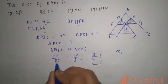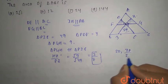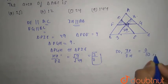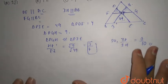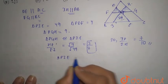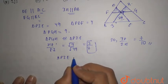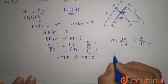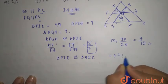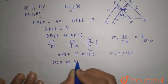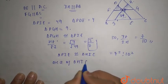From this, IP divided by IH equals 7 by 10. Similarly, triangle PIE is also similar to triangle HIC. Their area ratio is 7² to 10², so the area of triangle HIC is 100.